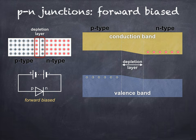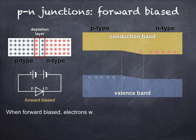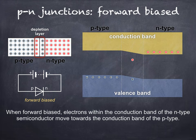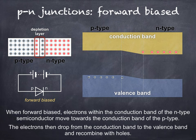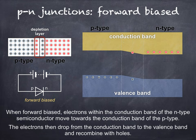So, when forward biased, electrons within the conduction band of the N-type semiconductor move towards the conduction band of the P-type. Holes within the valence band of the P-type also move towards the valence band of the N-type. Within the junction, electrons drop from the conduction band to the valence band and recombine with holes. Energy is released during these recombinations, and in a P-N junction diode this is in the form of heat, which results in a rise in temperature.